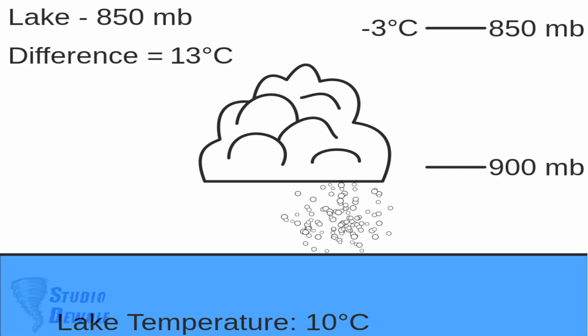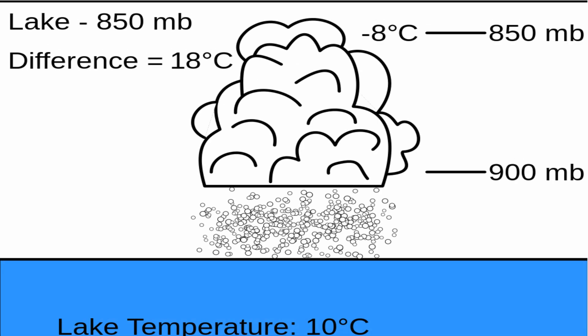In the following figure, the temperature difference between the water and the air is 13 degrees — the cloud can produce snow. In the last figure, the temperature difference is 18 degrees and the cloud can produce even more snow. So, temperature difference and instability are directly related: the greater the difference, the more unstable and convective the lake effect precipitation will be. It can also cause thundersnow.